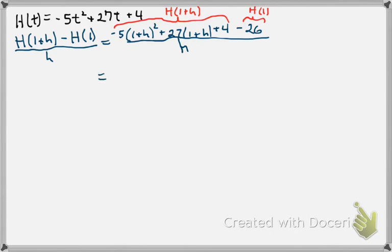We're going to multiply out as much as possible. In the numerator we have negative 5. Now (1 plus h) quantity squared, that is not 1 squared plus h squared, it's 1 plus 2h plus h squared. And we have the plus 27 times (1 plus h), and we have a positive 4 and a minus 26, which leaves us minus 22.